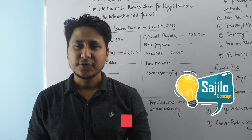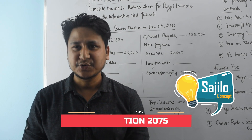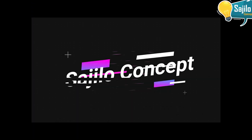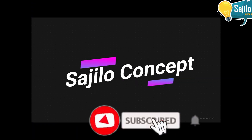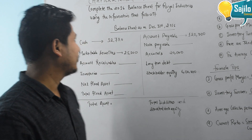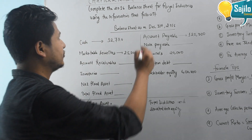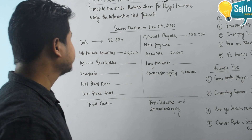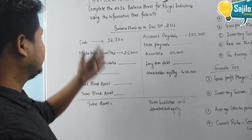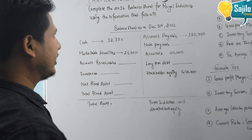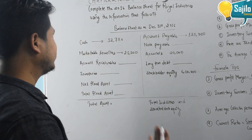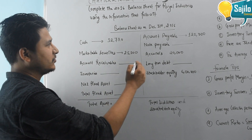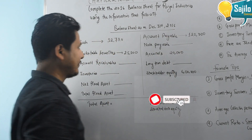Today's question is the question of the 25th chapter. Complete the balance sheet for Rural Industries using the information of the following balance sheets, as on the 31st December 2016. We will show the balance sheet.